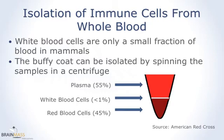As shown in the figure below, mammalian blood is comprised of approximately 55% plasma and about 45% red blood cells. This means that the white blood cell fraction, or buffy coat — the fraction containing immune cells — makes up less than 1% of the blood. The buffy coat can be separated out from the rest of the blood using high-speed centrifugation.